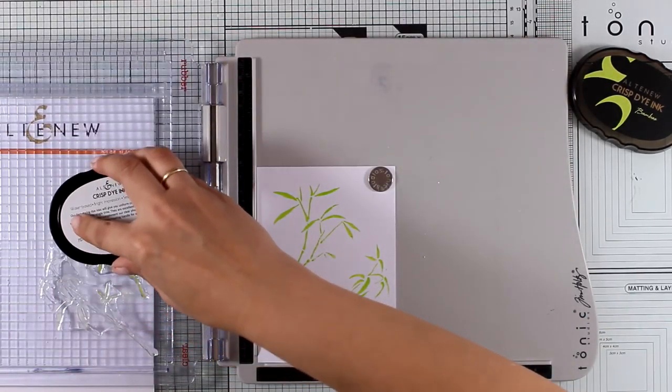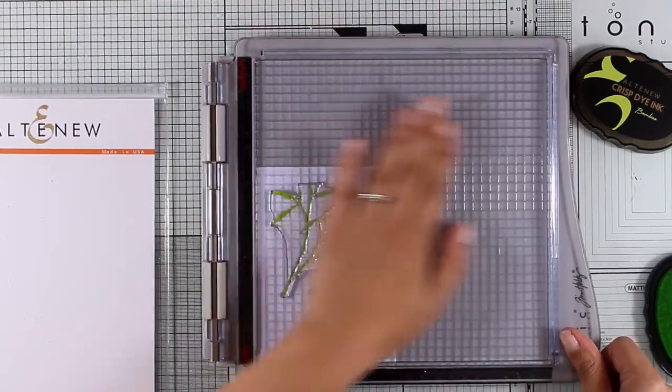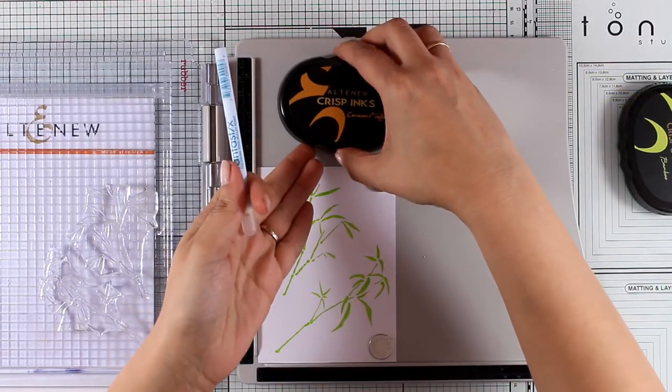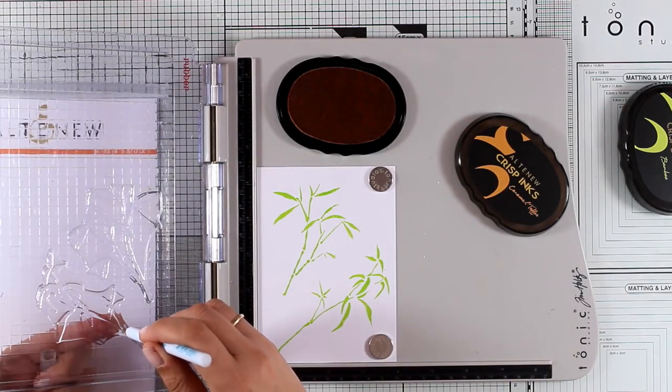I am stamping them twice to get a nice and crisp image. And now I want to add some more dimension with a second color, and for that I'm using Caramel Toffee.